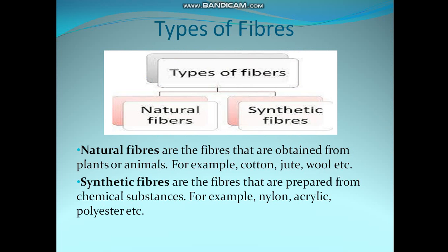There are two types of fibers: first is natural fibers, and second is synthetic fibers. Natural fibers are those fibers which are obtained from plants or animals — for example, cotton, jute, wool, and flax.